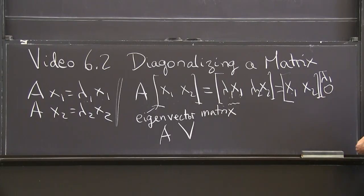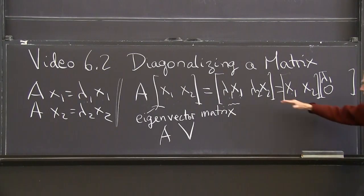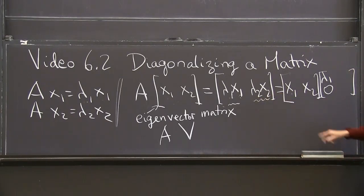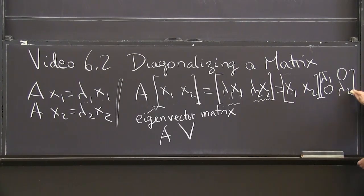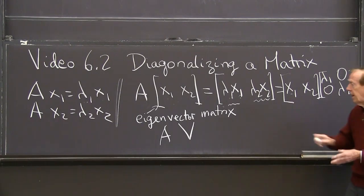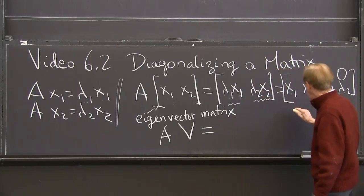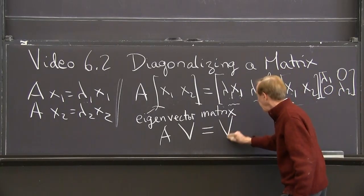Can you see what I want in the second column here? The result I want is lambda 2 x2. So I want no x1's and lambda 2 of that column. So that's 0 times that column plus lambda 2 times that column. Are we OK? So what do I have now? I have the whole thing in a beautiful form. This is A times the eigenvector matrix equals, there's the eigenvector matrix again, V.